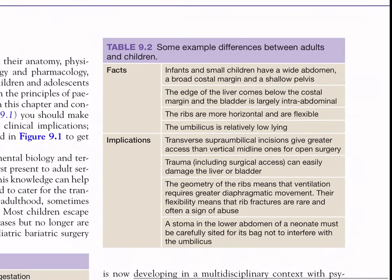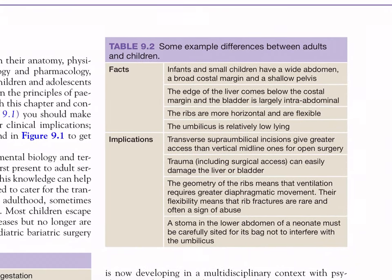This is Table 9.2: some example differences between adults and children. Infants and small children have a wide abdomen, broad costal margin and a shallow pelvis. The edge of the liver comes below the costal margin and the bladder is largely intra-abdominal. The ribs are more horizontal and flexible. The umbilicus is relatively low-lying.